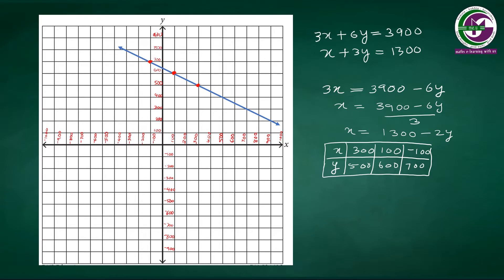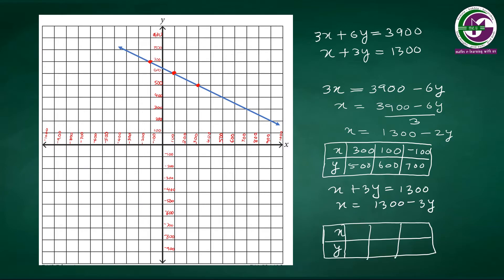For the second equation of Question 2, x plus 2y equals 1300 means x equals 1300 minus 2y. Drawing the table: when y is 100, x is 1000; when y is 200, x is 700; when y is 300, x is 400. Plotting points (1000, 100), (700, 200), and (400, 300) on the graph and drawing the line through them gives the graphical representation of this question.